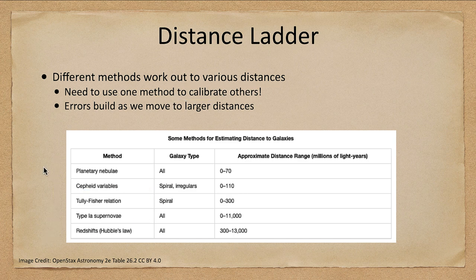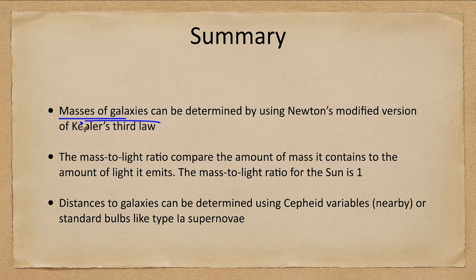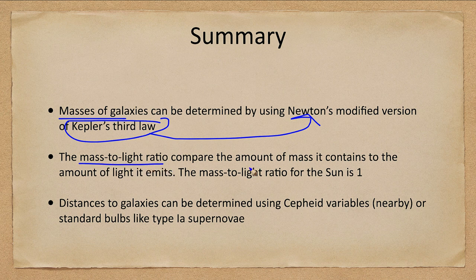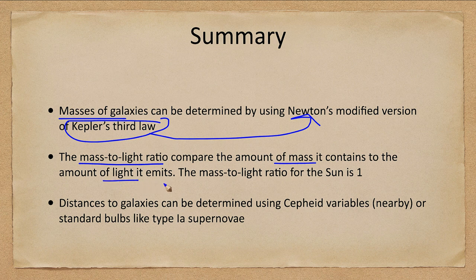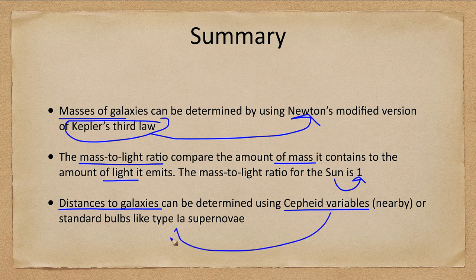So let's go ahead and finish up here with our summary. What we've looked at is that masses of galaxies can be determined using Kepler's third law as modified by Newton. We looked at the mass to light ratio as a way of comparing the amount of mass an object contains to the amount of light it emits. For the sun, this is one. And we looked at some of the ways of determining distances to galaxies using Cepheid variables or for more distant galaxies type 1A supernovae.